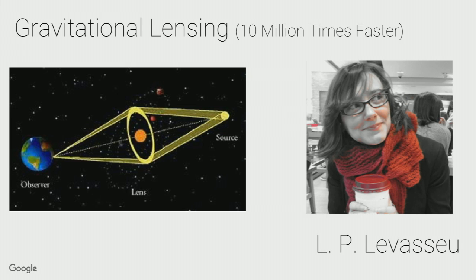We start with a group of astrophysicists at Stanford who had the problem of solving gravitational lensing equations. There's a galaxy far away whose light is coming towards Earth, and in between there's another galaxy that bends the light. If we could figure out exactly what's going on, we could essentially weigh that galaxy and learn interesting things about dark matter.